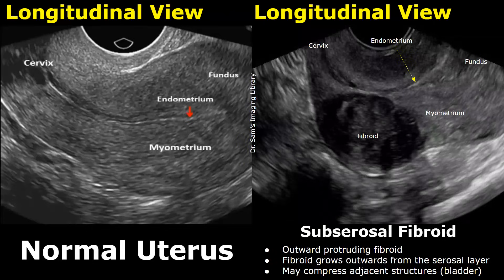This is another case of subserosal fibroid. It is usually considered a subserosal fibroid when more than half of the fibroid is protruding outwards.